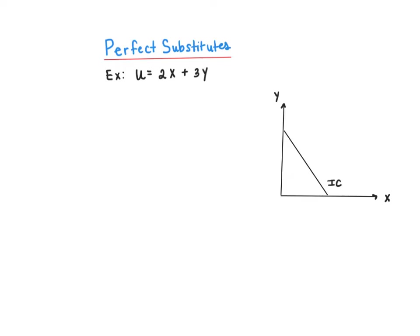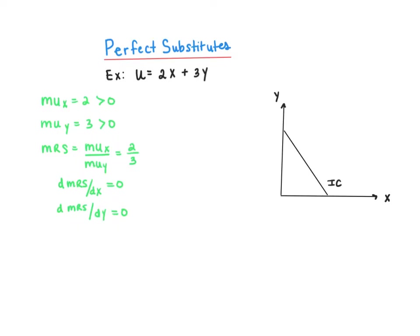A second way to graph an indifference curve for this utility function is to use the signs of MUx, MUy, dMRS/dx, and dMRS/dy. Here, both marginal utilities are positive, telling us that for each good, as consumption goes up, total utility goes up, revealing that each good is a good good. For this reason we know that an indifference curve will slope downward.